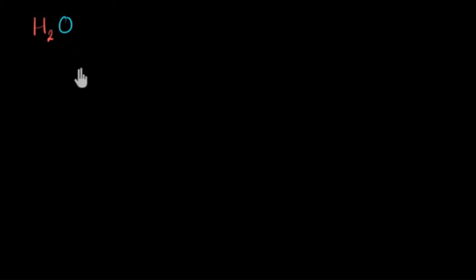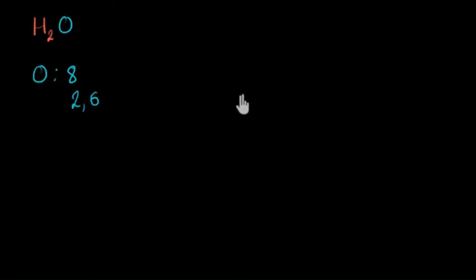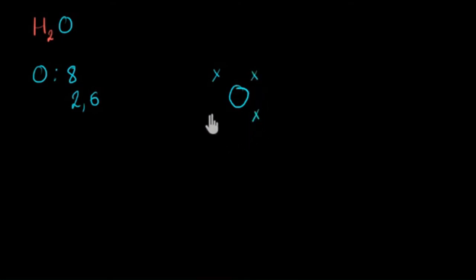Let's start with oxygen. Oxygen's atomic number is eight, which means in a neutral atom of oxygen, there are going to be eight electrons going around it. Its electronic configuration is 2,6, meaning there are six electrons in the outermost shell of oxygen. So let me draw oxygen with six electrons around it — I'm going to represent the electrons with crosses: one, two, three, four, five, six.